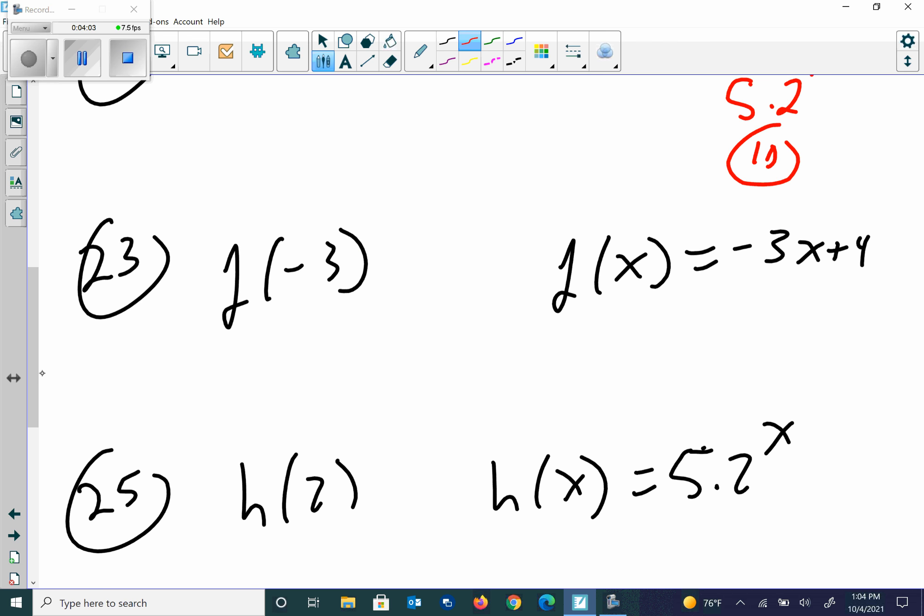Number 23, we're going to use the f equation. So I'm going to take this negative 3, plug it in here. So I get negative 3 times negative 3 plus 4. So that's going to give me 9 plus 4. Negative times negative is positive. That's 13.